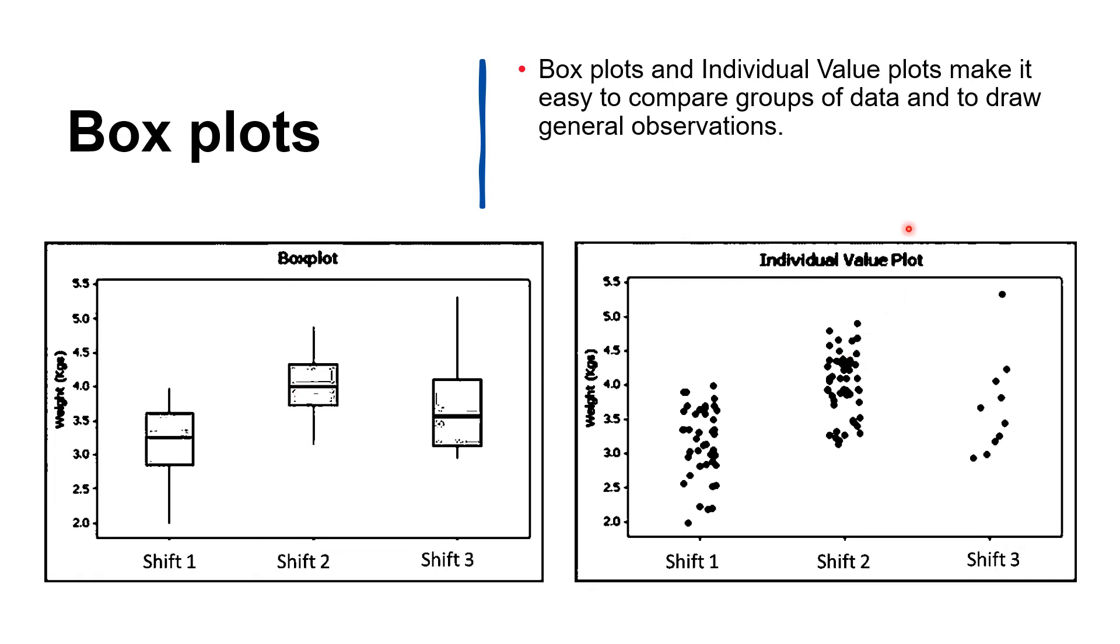And you see here the individual value plot - similar observations can be made from the individual value plot of the same data. But the individual value plot provides additional insight because it clearly shows that the sample of Shift 3 was quite small - around 10 data points, with just one much heavier.